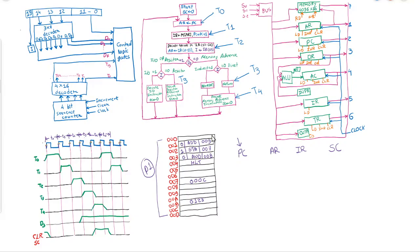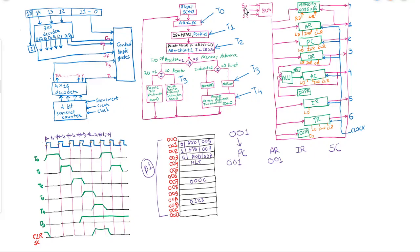How will execution take place? Whenever we start a process, the initial address of the process will be loaded into the program counter. So the initial value of the program counter will be 001. Now at T0, in the first clock cycle, we will transfer the content of PC into AR. The initial value of the program counter was 001 and it will be transferred into the address register. In the bus architecture, PC will be selected by providing the value 00010, and the load input of AR will be enabled.